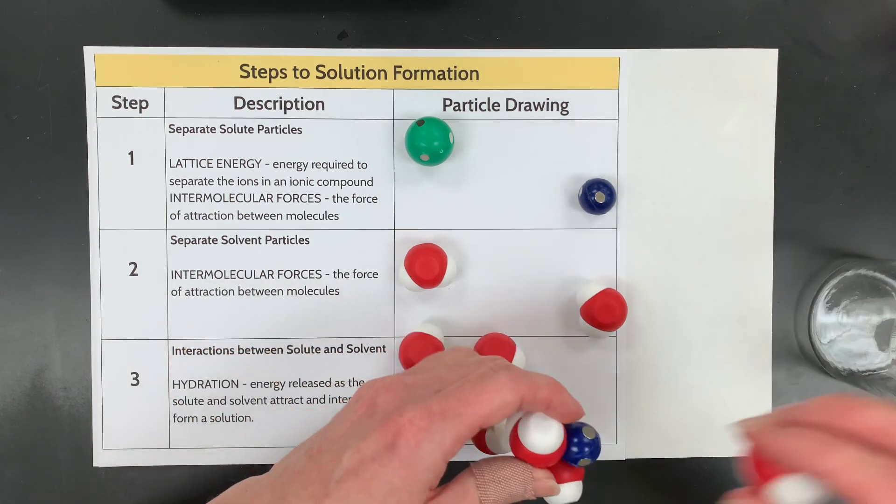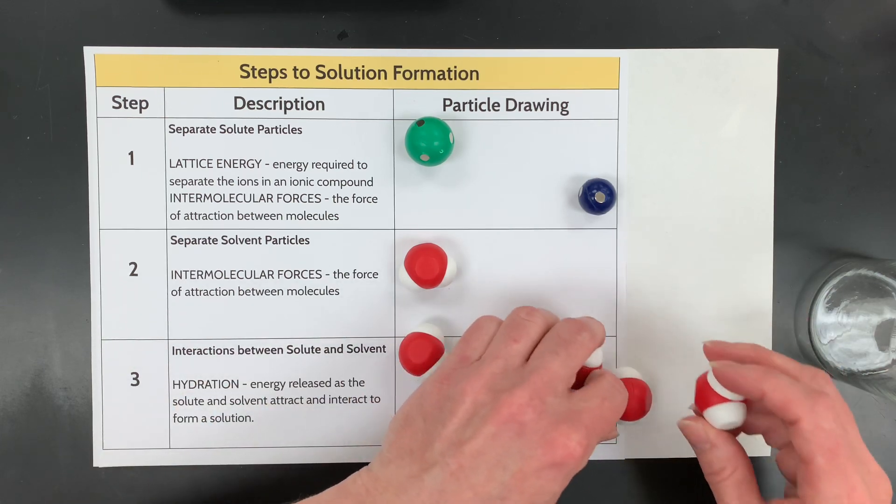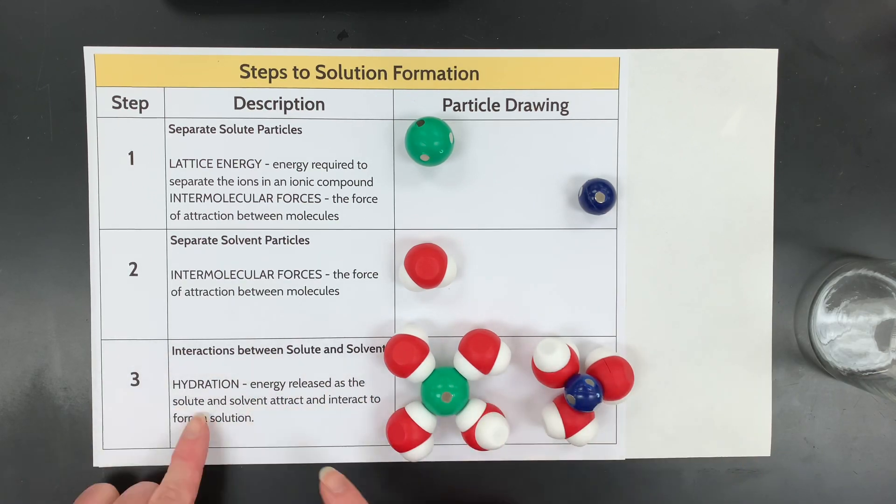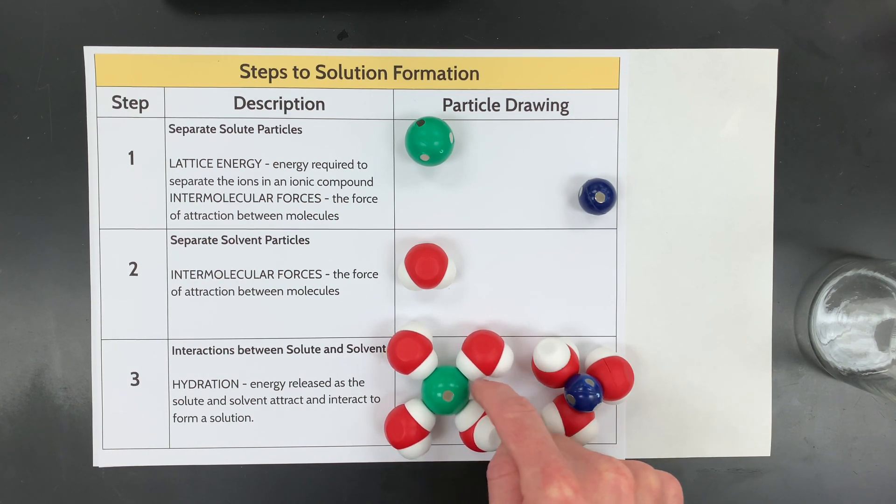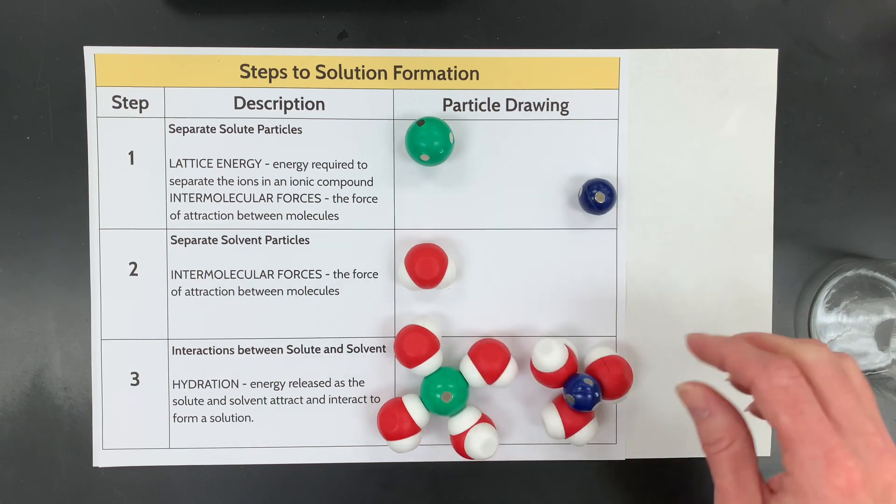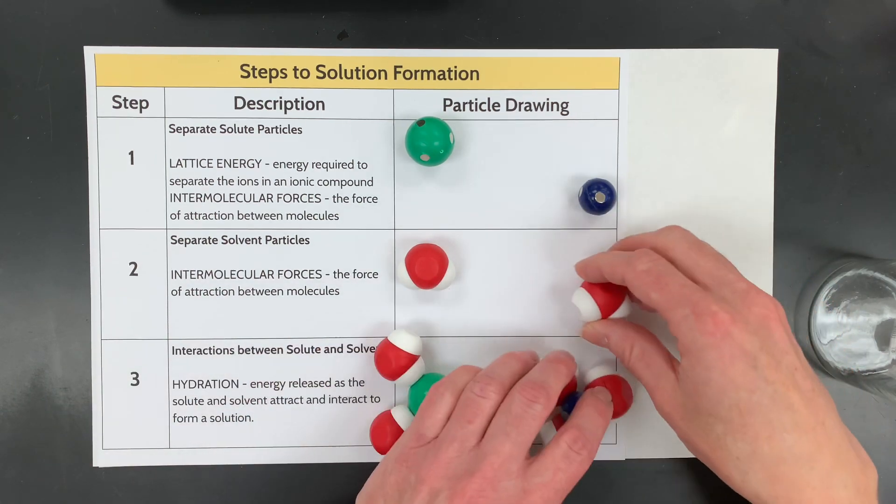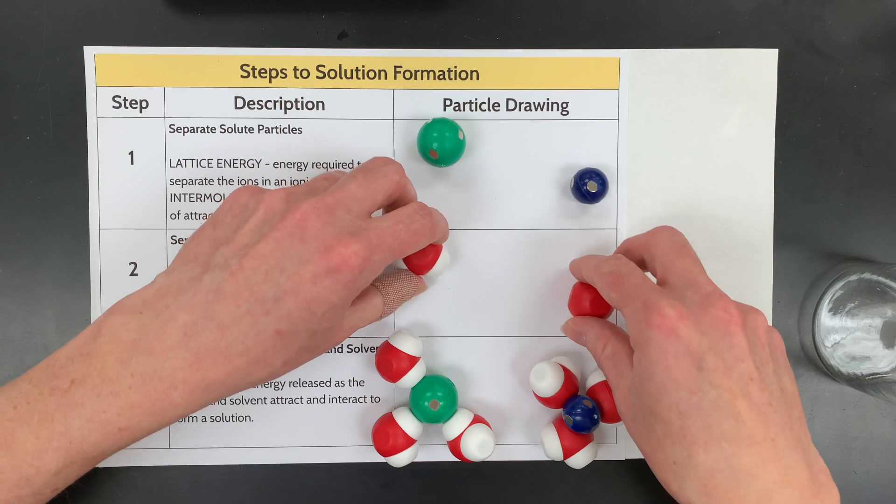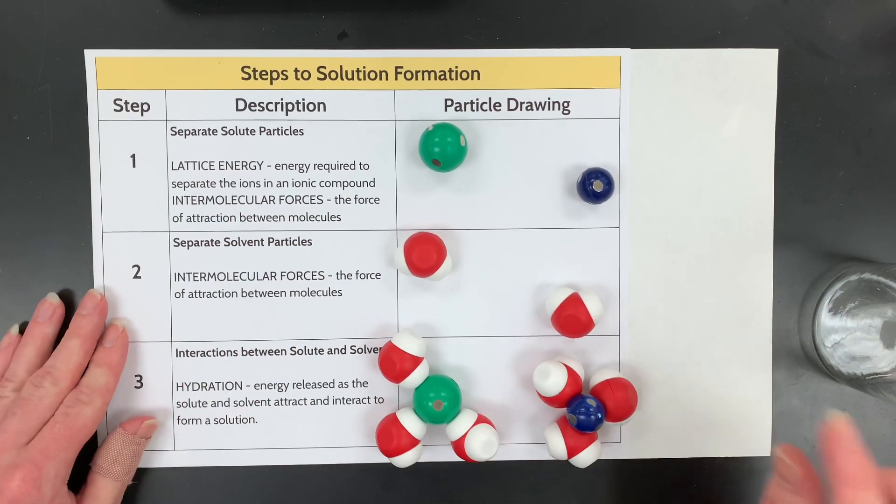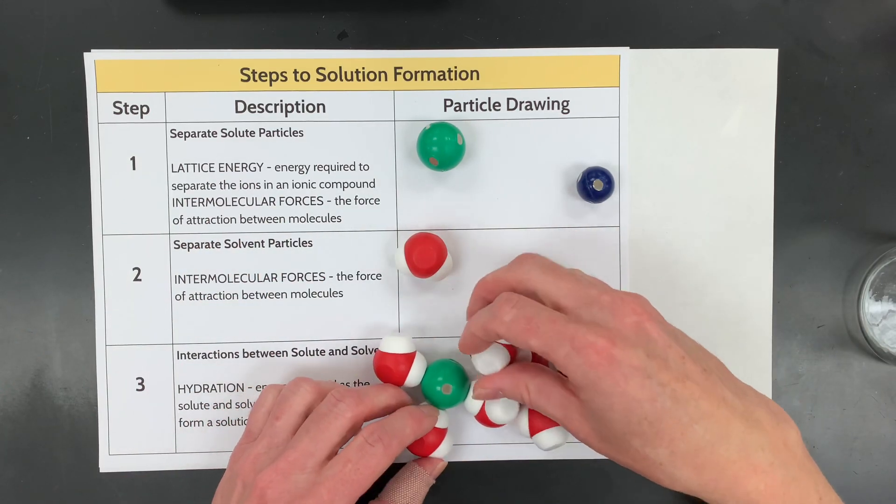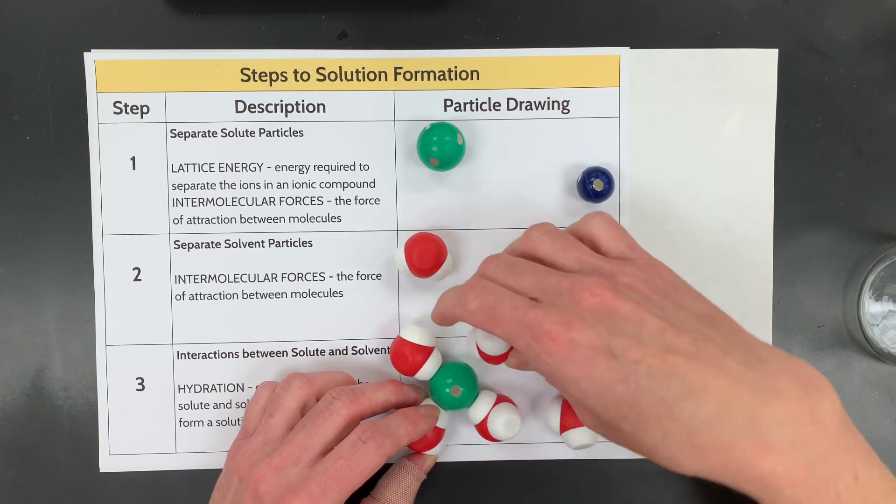So these are going to be attracted to water kind of like this. There will be more, but I want you to be able to see the ions that are being surrounded and they're called hydrated by the water molecules. With the positive end of the water facing the negative end of the chloride, and then the negative end of the water facing the positive sodium. First we have to pull these apart. That's endothermic. Separate these away from each other. Remove those IMFs. That's endothermic. Remember, the molecules are staying intact. And then they can interact and form a hydrated solution.